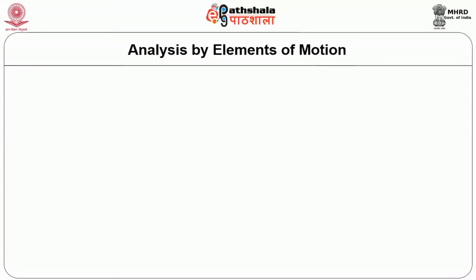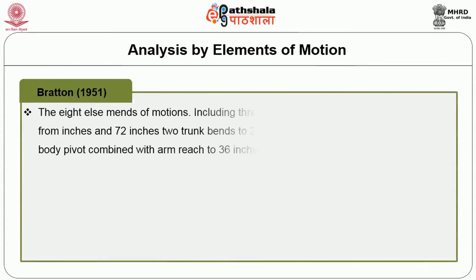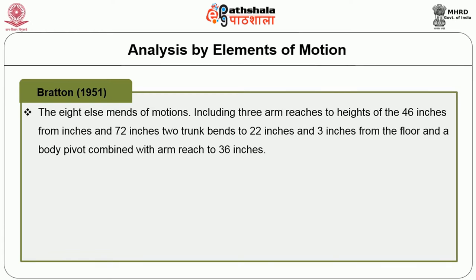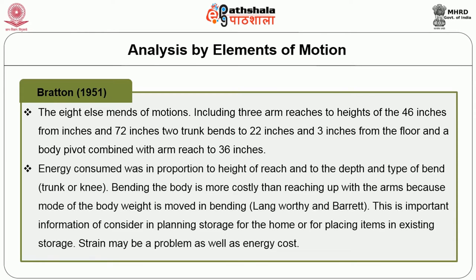According to Barton (1951), a study of eight elements of motion was conducted, including arm reaches to heights of 46, 58, and 72 inches, trunk bends to 22 inches and 3 inches from the floor, and body pivots combined with arm reaches to 36 inches. Energy consumed was proportional to the height of reach and the depth and type of bend. Trunk or knee bending is more costly than reaching up with arms because more body weight is moved in bending. This is important information for planning storage in the home or for placing items in existing storage.